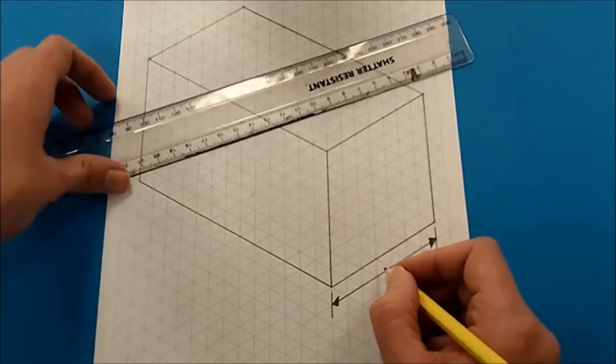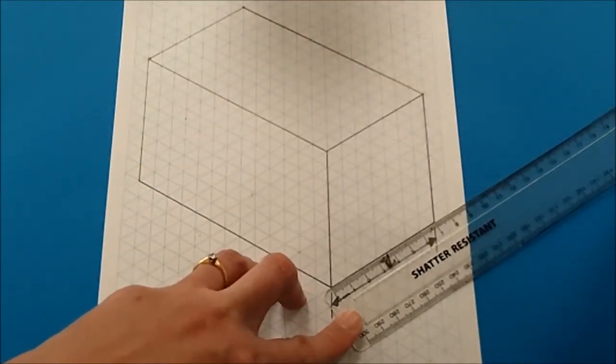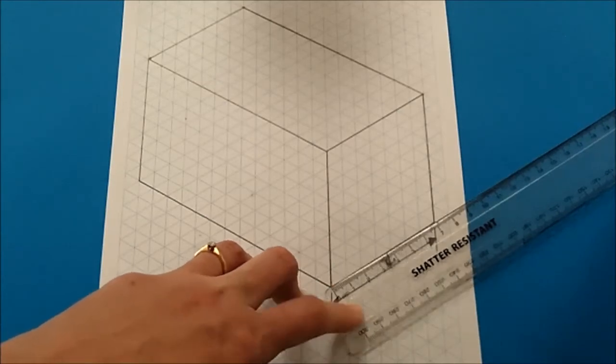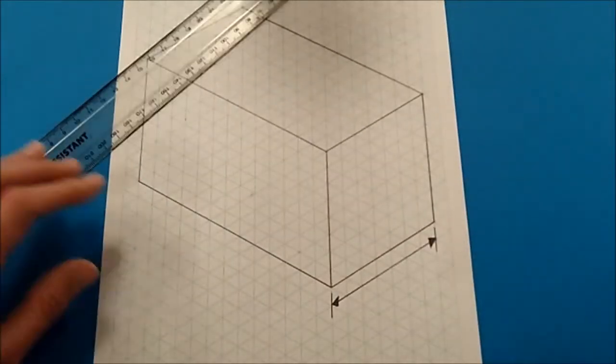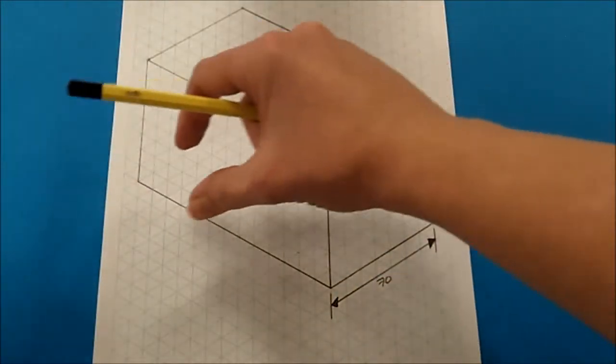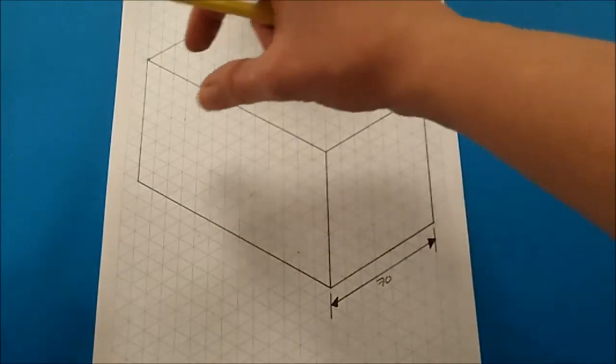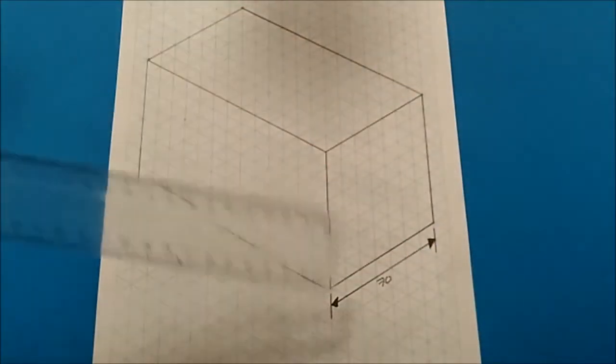Now this measure over here is going to be 70 mil and if you're not sure you can always check. Notice that each section on your isometric paper represents 10 mils or one centimeter, so there's 70. When dimensioning, you always dimension at the base and then to the right. It's just one of those rules that we try to follow here at Car Hill.